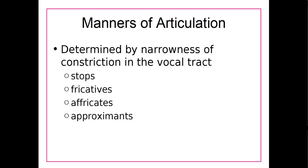Basically, what that means is that even though a sound might be made at the same part of the mouth as another sound, there's going to be a different type of constriction of the airflow through the mouth at that point. Stops are going to be the most constricted type of sound, and approximates will be the least constricted. Keep in mind this is just in terms of consonants — we'll look at vowels separately a bit later.